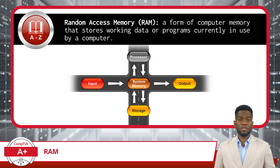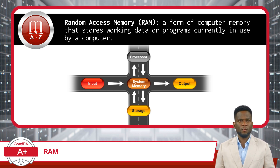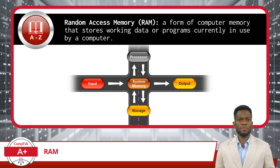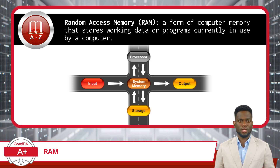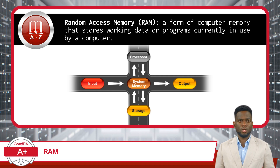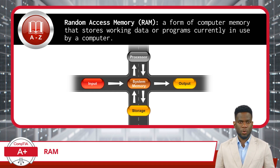Unlike storage devices such as hard drives or SSDs, RAM is volatile memory, meaning that its contents are lost when the computer is powered off. RAM allows the CPU to quickly access and manipulate data, making it essential for running programs and multitasking. It acts as the computer's short-term memory, providing fast read and write speeds to support the efficient execution of tasks.